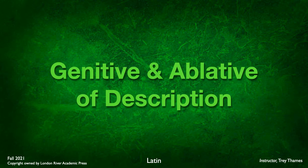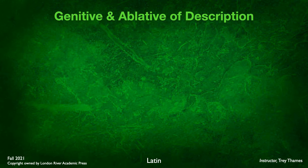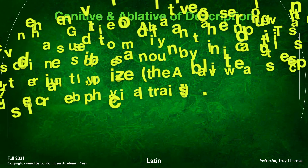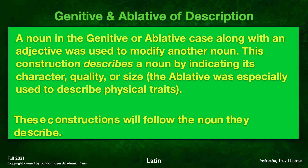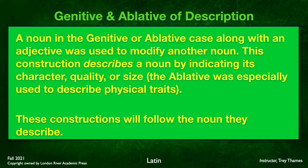The last thing we're going to learn this chapter and this semester is genitive and ablative of description. We've learned many uses of both the genitive and ablative cases. Here, a noun in the genitive or ablative case along with an adjective is used to modify another noun. This construction describes a noun by indicating its character, quality, or size. Note that the ablative case was often used especially to describe physical traits, and these constructions follow the noun they describe.